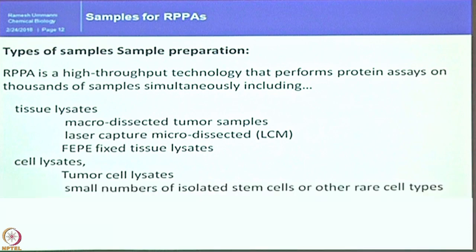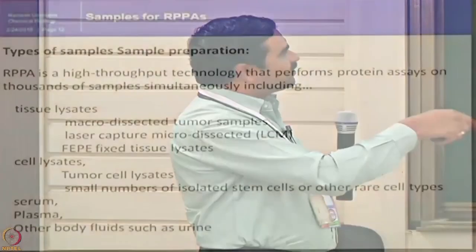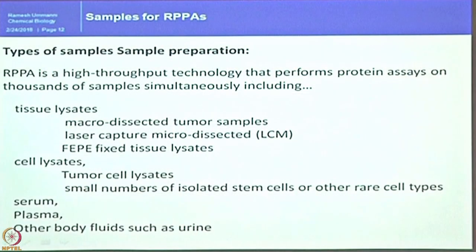Lysates can be prepared from a small number of isolated stem cells or other rare cell types. Stem cell biology always deals with thousands of cells — not even millions, which we use in cancer research. Serum, plasma, or any body fluid such as cerebrospinal fluid or urine can also be directly printed on the lysate by following specific methods.